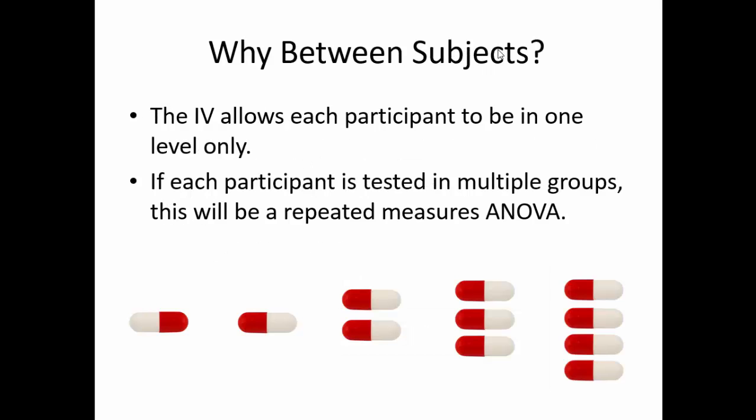So why is this one between subjects, specifically? The independent variable allows each participant to be in exactly one level. If any participant is tested in multiple groups, then we would be running a repeated measures ANOVA. In the example today, participants will either get a placebo, or one milligram, or two, or three milligrams, or four. But no participant will receive one milligram and four milligrams and the placebo. It's one group or the other.